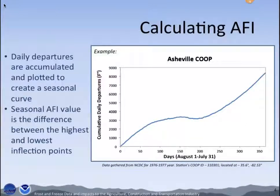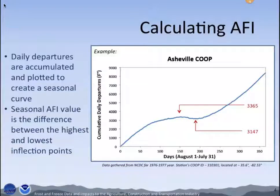The seasonal AFI values are the difference between the highest and lowest inflection points on the seasonal curve. In our example, the highest inflection point is 3,355 and the lowest is 3,147. The difference between those two inflection points is 218, which is the AFI value for Asheville for the 1976–77 season.